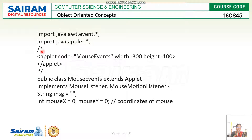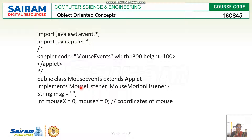Before creating the class, we have to create the applet code. The applet code starts with the keyword 'applet code', which is the class name, along with the width and height of the applet window. Then the class extends the Applet class and implements two important listeners: MouseListener and MouseMotionListener, since we are going to perform mouse handling operations in the applet.